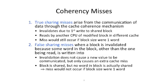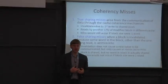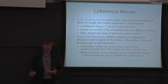We're going to put coherency misses into two different categories. The first is true sharing misses. A true sharing miss is one that would still occur even if the cache block size were reduced to the minimal size, such as one byte. That's a true miss — you're actually sharing data. For example, if one cache writes some data and another processor wants to read that data and needs to pull it into its cache, that's a true sharing miss. You need to do that communication.